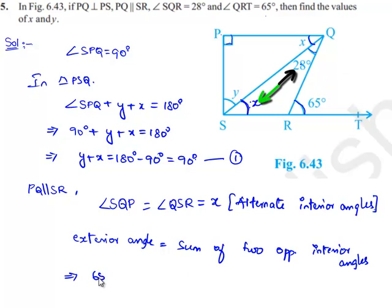The exterior angle is 65 degrees, which equals the sum of two opposite interior angles, 28 degrees plus X. Therefore, X equals 65 minus 28, which equals 37 degrees.